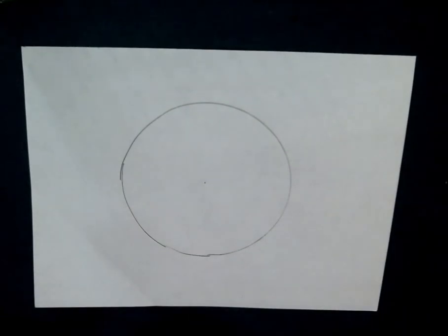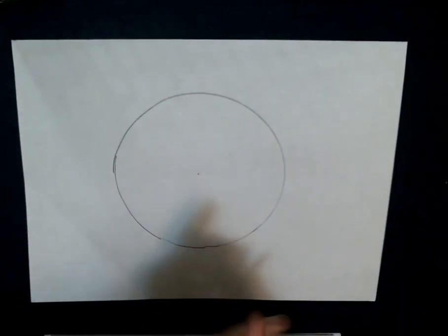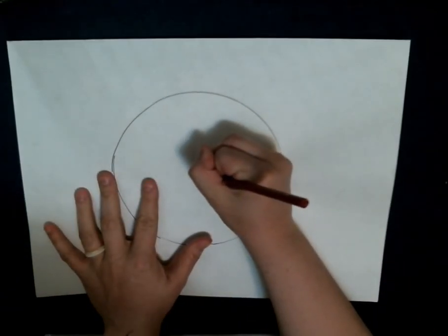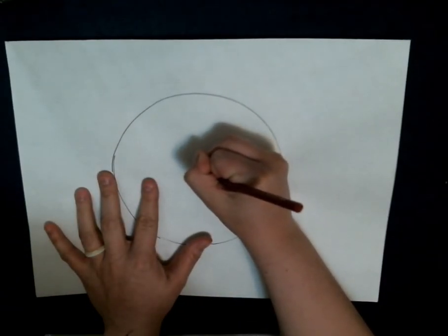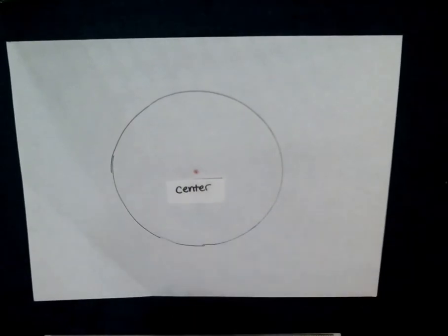So there's a couple different parts that we should go over. First, let's talk about this point right here that I made with my pushpin. I'm just going to kind of color that in red. This part of the circle is called the center, the center of the circle.